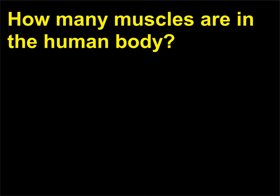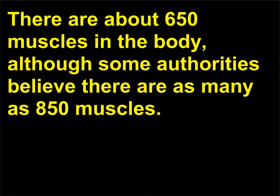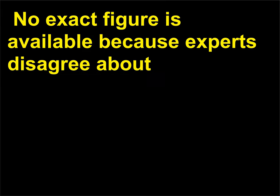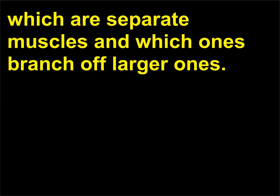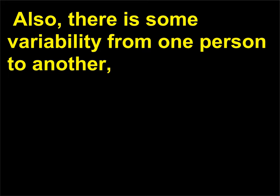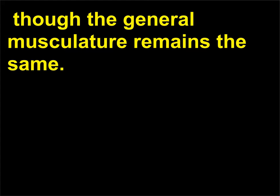How many muscles are in the human body? There are about 650 muscles in the body, although some authorities believe there are as many as 850 muscles. No exact figure is available because experts disagree about which are separate muscles and which ones branch off larger ones. Also, there is some variability from one person to another, though the general musculature remains the same.